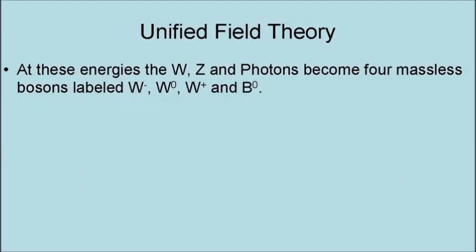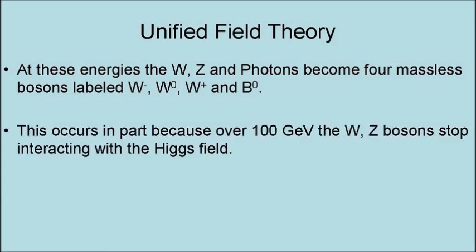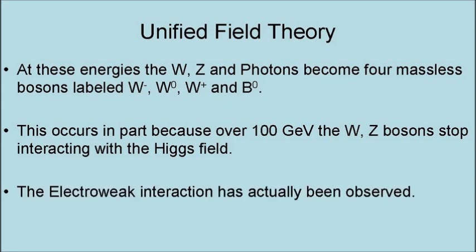At these energies, the W, Z, and photons become four massless bosons labeled W-, W0, W+, and B0. This occurs in part because over 100 gigavolts, the W and Z bosons stop interacting with the Higgs field. The electro-weak interaction has actually been observed.